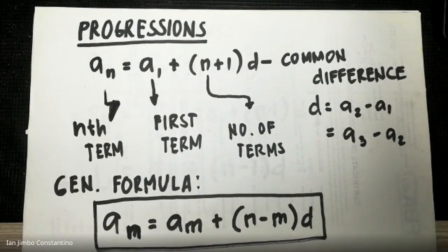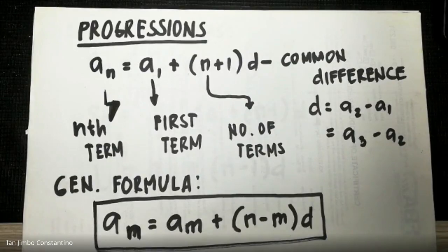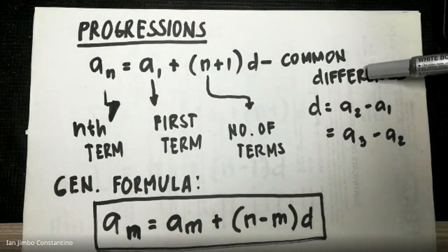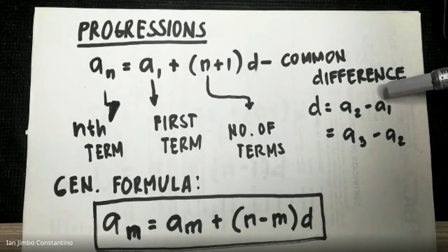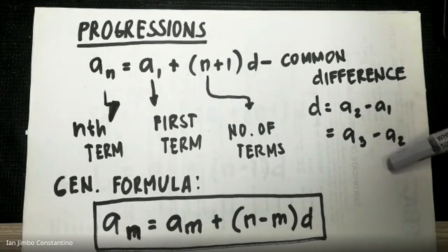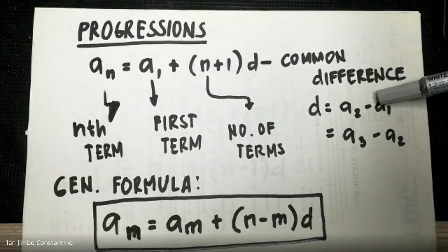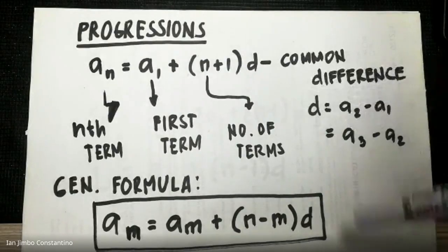Let us focus first on arithmetic progression. What determines an arithmetic progression? The determining factor is the common difference — the consecutive terms have the same difference. You start with the first number, then the second number, and so on. The difference between two consecutive terms is equal; that is what we mean by common difference.